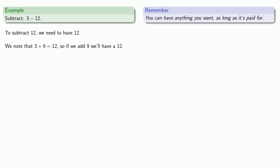So if we add 9 we'll have a 12. But we have to pay for it. We need to subtract a 9 to keep our expression the same. So 3 minus 12 becomes 3 plus 9 minus 12 and then the bill for the 9 comes due. We have to subtract 9 at the end to keep our expression the same.